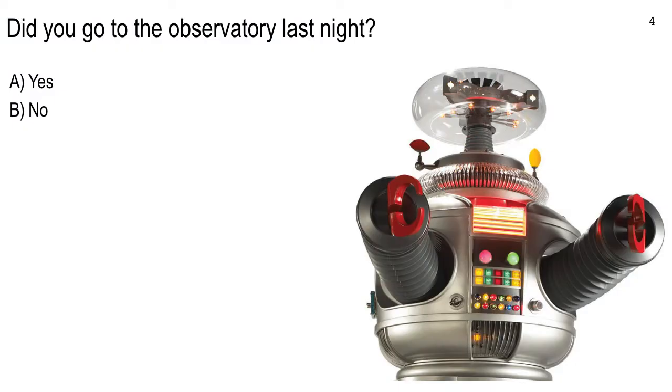Clicker question number one, this one's a short answer. Type in the letter A or B, depending on if you went last night. Both answers will be graded correct. We just want to see how many people went. Type in an A and then hit the send key, or type in a B and hit the send key. Ten seconds to vote. Ten, nine, eight, seven, six, five, four, three, two, one, zero. Okay, good. It looks like about 65 of you went. That's great.